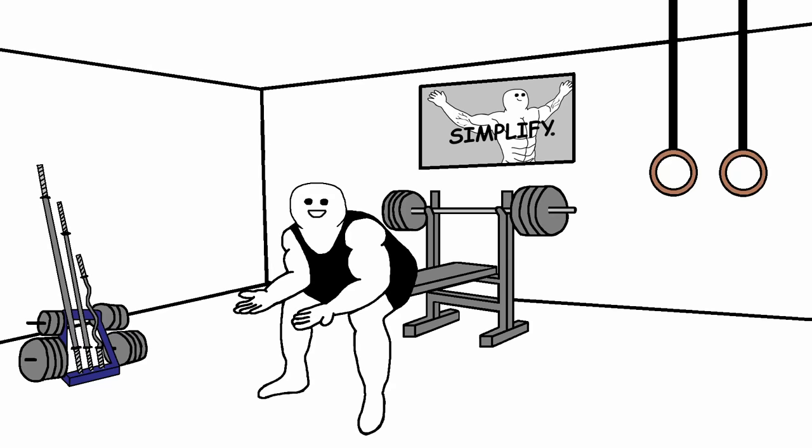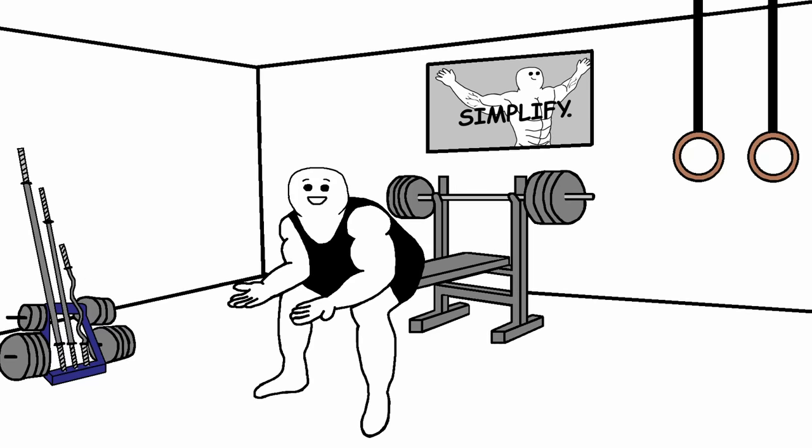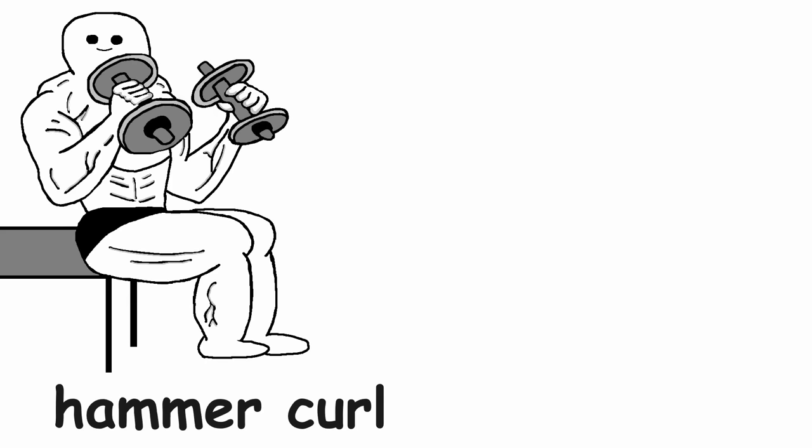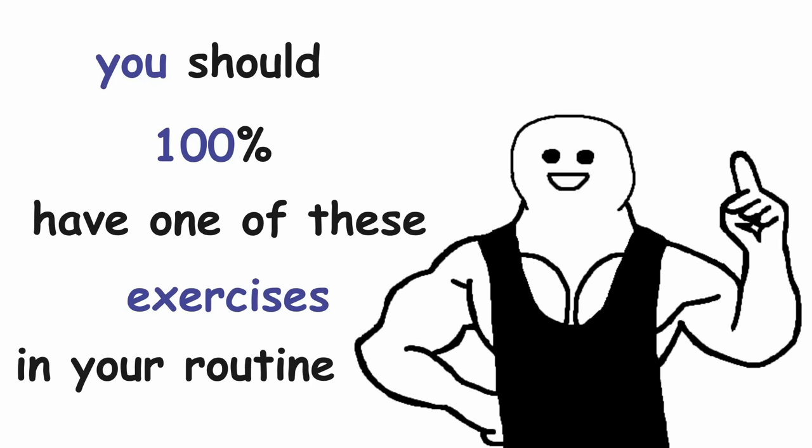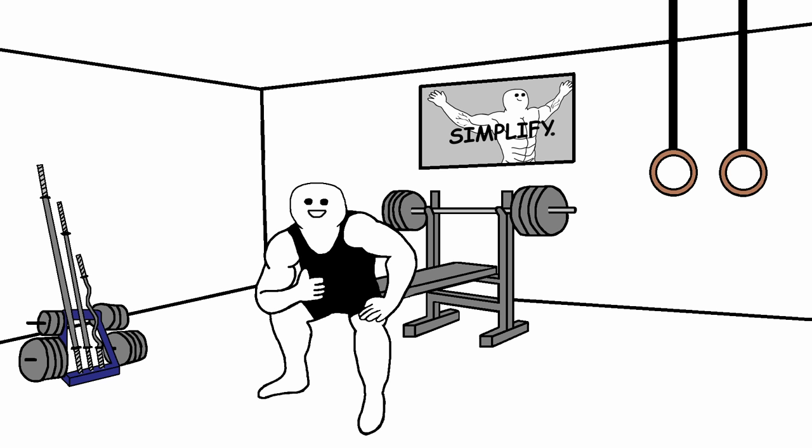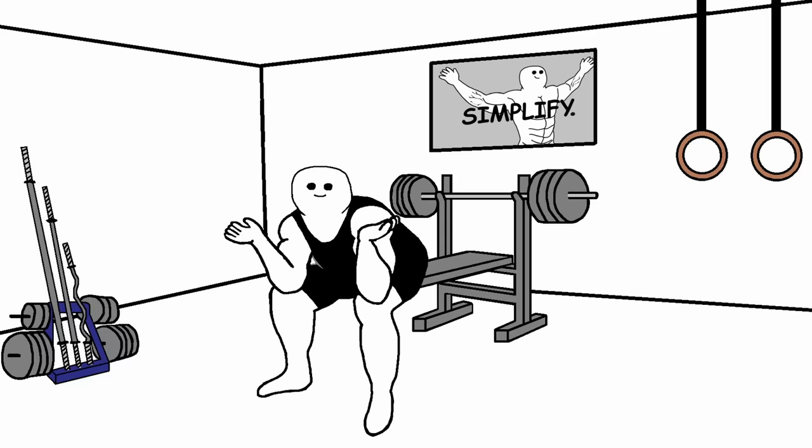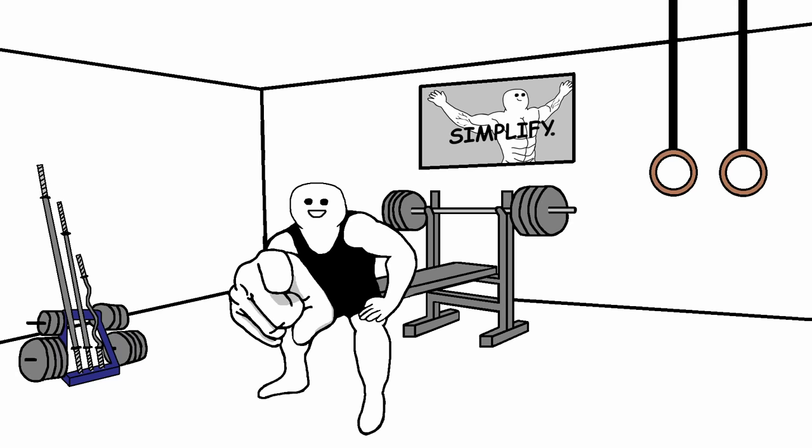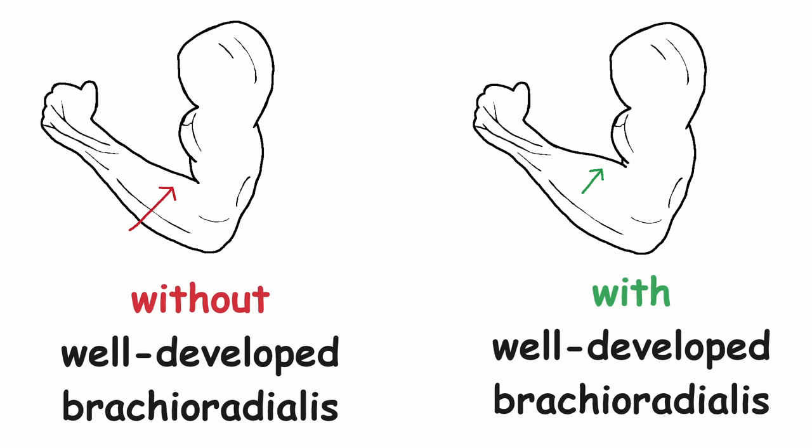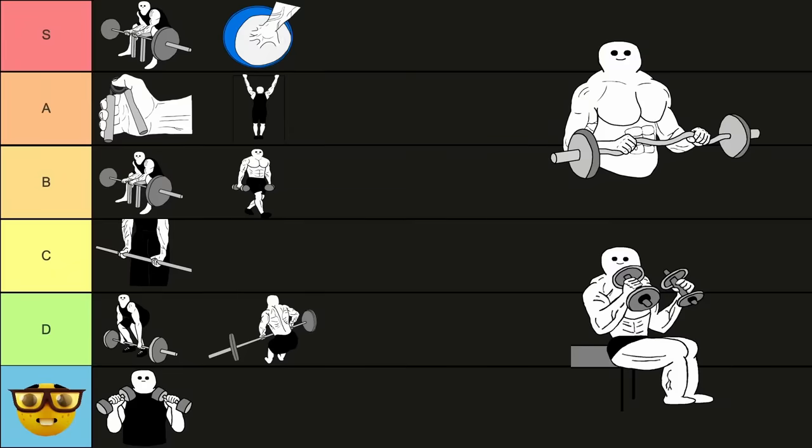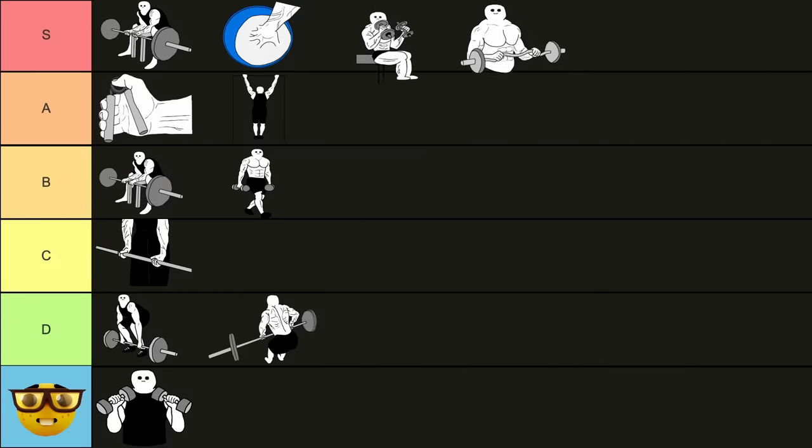So as I said, the next two exercises target both the forearms and the biceps. It's the hammer curl and the reverse curl. You should 100% have one of these exercises in your routine, as it is just irreplaceable. Even if you don't isolate your forearms at all, you should at least add one of these exercises into the day that you train your arms on. Because increasing the size of your brachioradialis is crucial if you want to make your arms look massive. Both the hammer curl and the reverse curl go into the S tier.